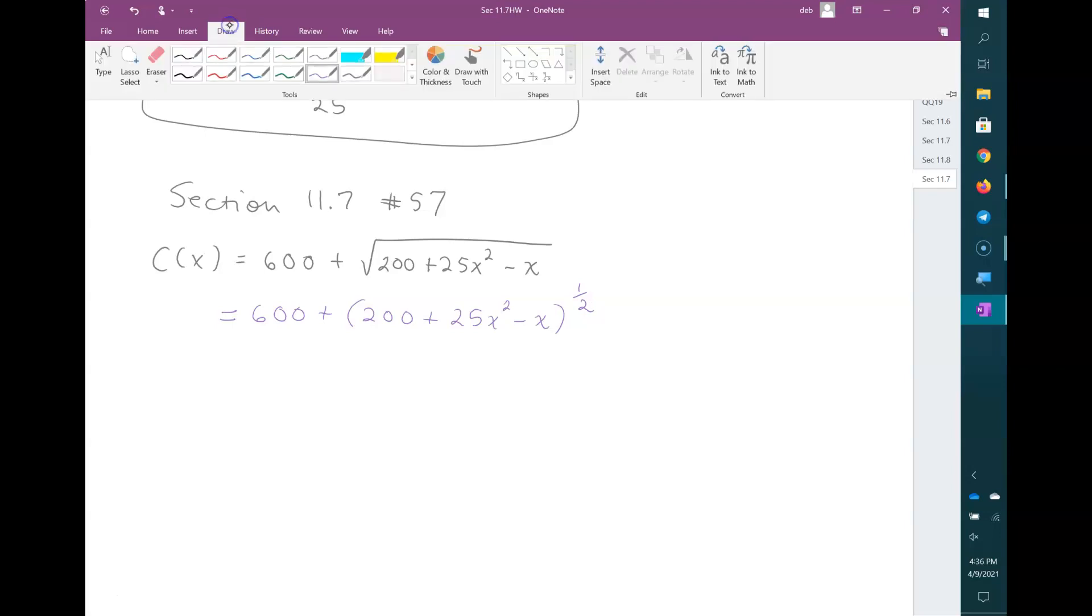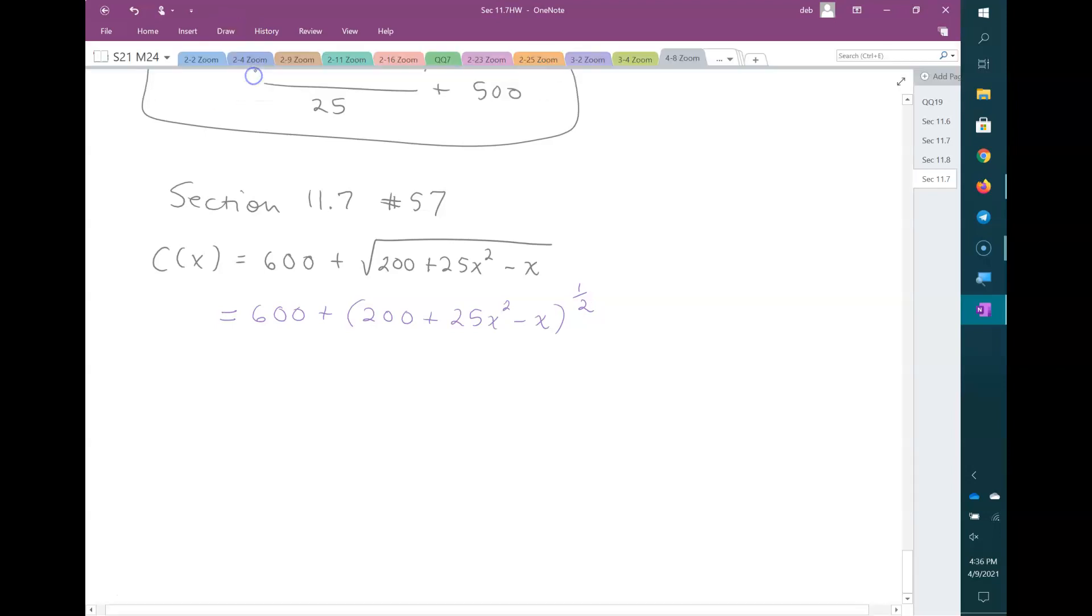So now I want to know what the derivative is. The derivative of the 600 is 0. Then I'll have the 1 half come down in the front. Don't change the function on the inside.